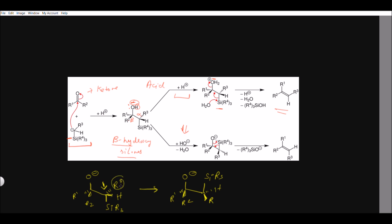If we invert this carbon by 180°, the hydrogen that was coming towards you will go away from you, and the R3 group that was going away will come towards you. After inversion, the silicon is on top and now O minus can easily bind to the silicon. This forms a four-membered ring transition state, as shown here.